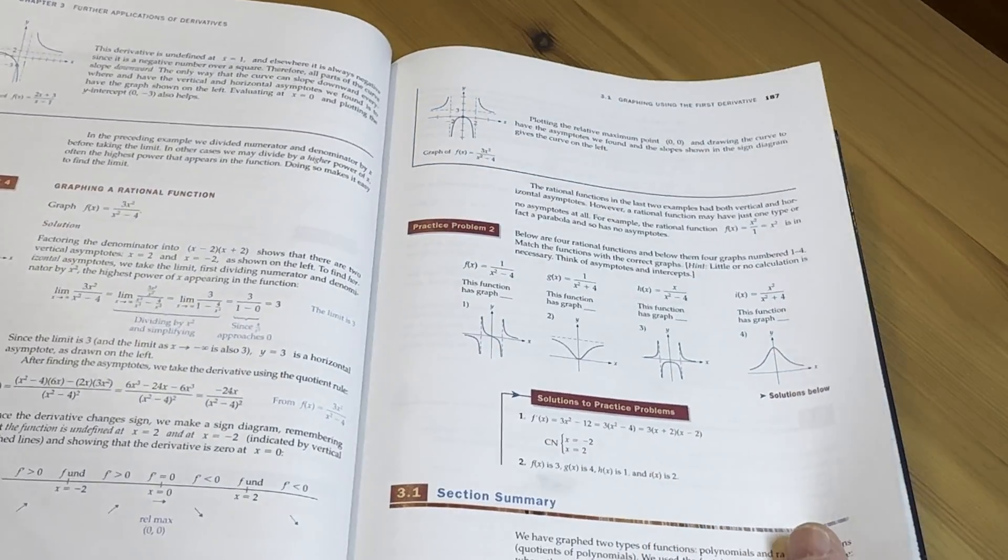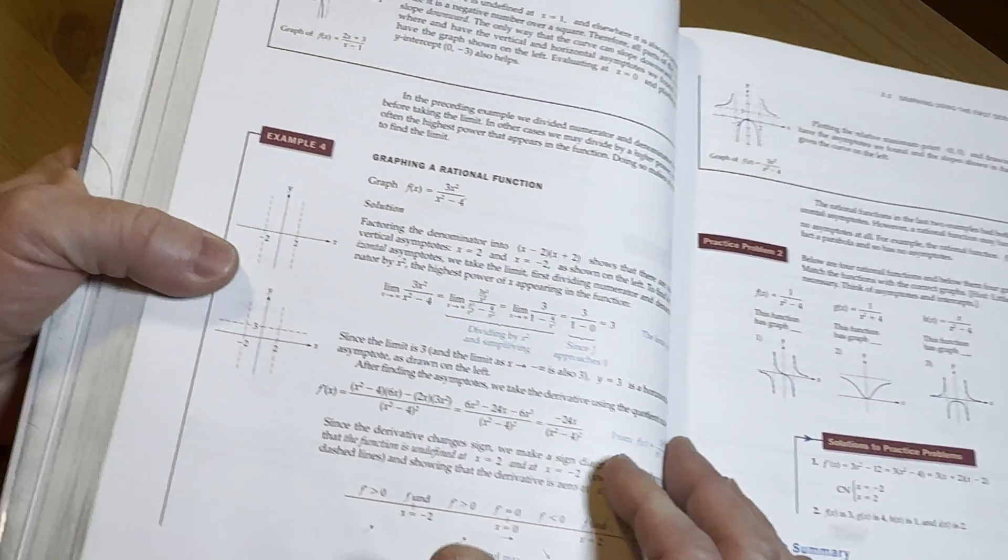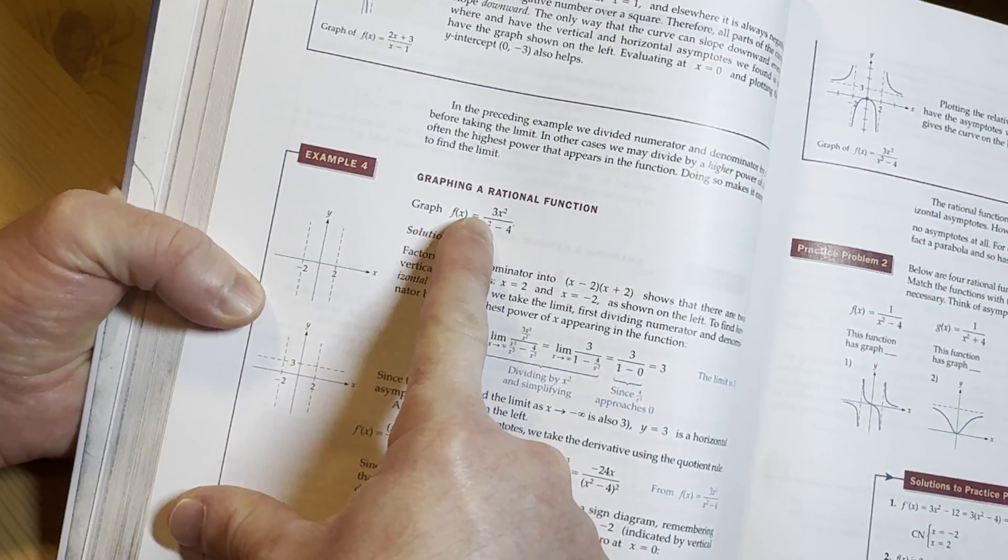You know, try to do it the way you enjoy it. Here's a graph, graph rational function. It's going to have a horizontal asymptote at three.